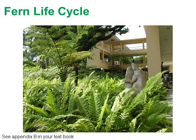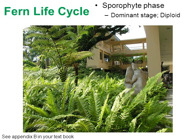Let's look at the life cycle of a fern. Here's a picture of some ferns growing outside of an apartment complex. Anytime you see ferns, what you're looking at is the sporophyte stage — the diploid stage of ferns. The sporophyte stage is the dominant stage: it's the stage in which ferns are most noticeable and the stage in which ferns spend the majority of their existence.